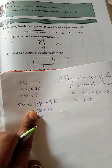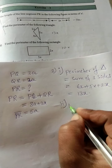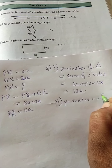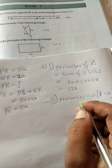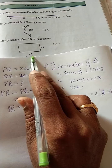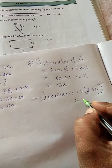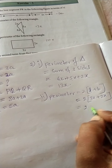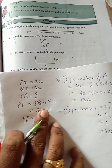Second part: find the perimeter of the following rectangle. The perimeter of a rectangle formula is 2 times (L plus B). Here length is 3x and breadth is 2x. So 2 into (3x plus 2x) equals 2 into 5x equals 10x. This is the perimeter of the rectangle.